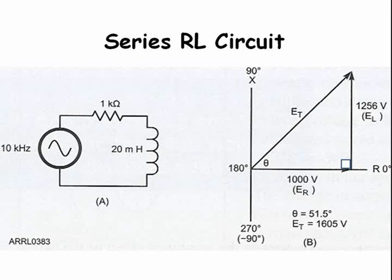We draw this voltage as a line pointing straight up in the 90 degree direction from the end of the previous line to the point 1000 and 1256. The right triangle that we just created will give us the solution to this problem. The length of the hypotenuse represents the magnitude of the voltage. The angle is the phase angle between the voltage and the current.